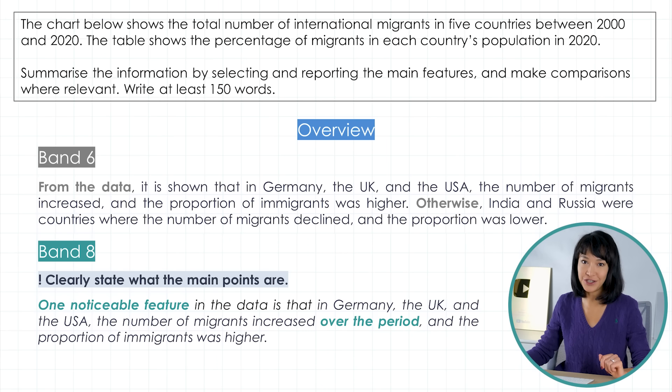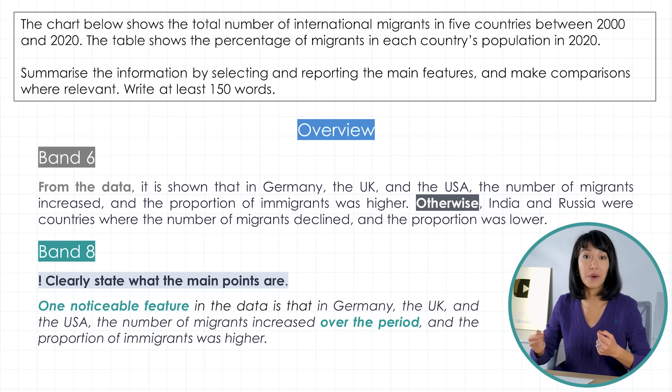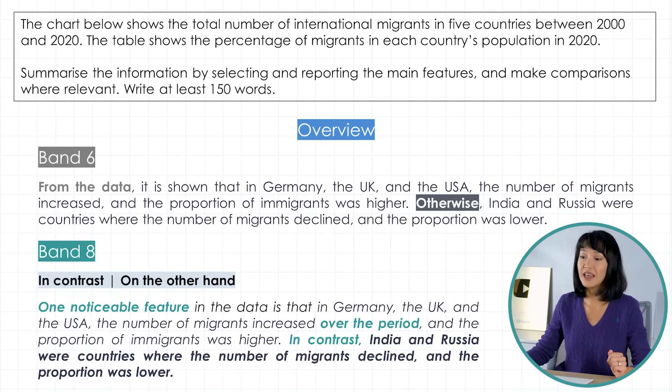And the other two countries — here the writer has made the mistake of using 'otherwise' incorrectly. That's what a band 6 describes as faulty cohesion. It's obvious what he wants to say, but it's the wrong word. We need to show a contrast. How about 'in contrast' or 'on the other hand'? 'In contrast, India and Russia were countries where the number of migrants declined and the proportion was lower.' For IELTS writing, it's really important to learn enough formal linking words for each situation to avoid losing marks for faulty cohesion. Learn them before your test.